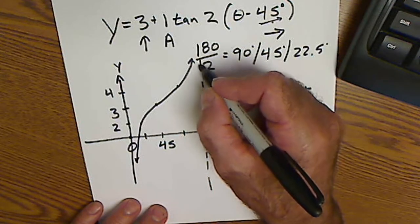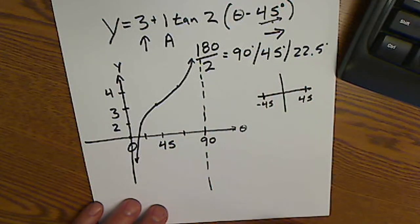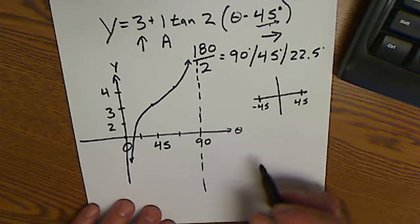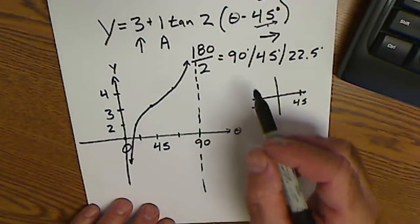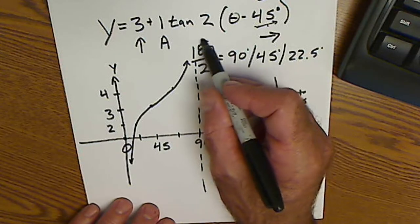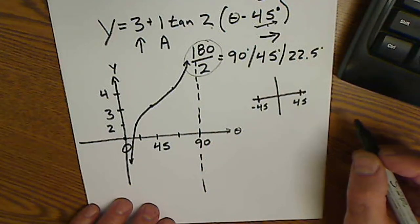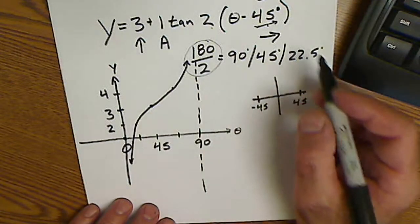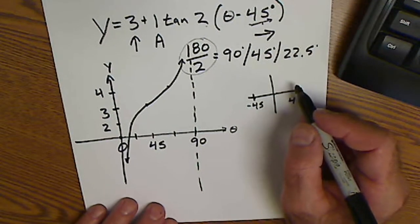It gets ever closer to that asymptote but never quite touches it. A couple things to remember about tangent and cotangent: it's 180 divided by this B value to get your period. Mark up your equation so you don't get any mistakes.